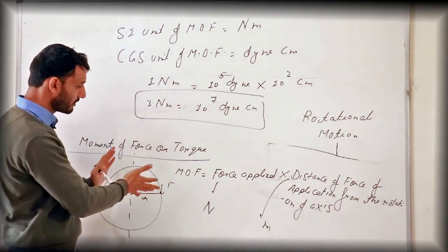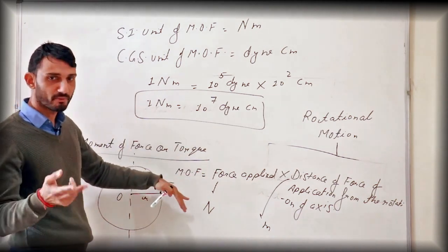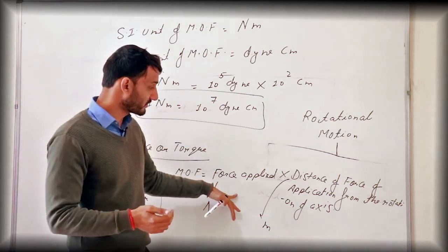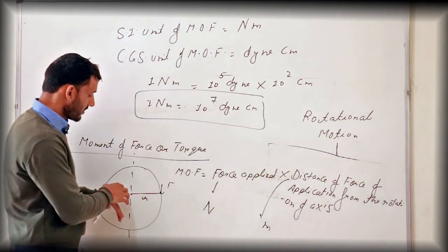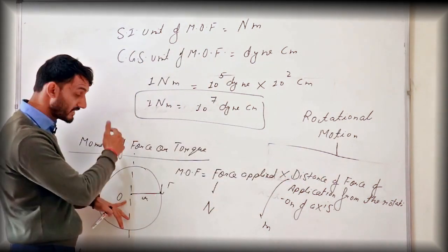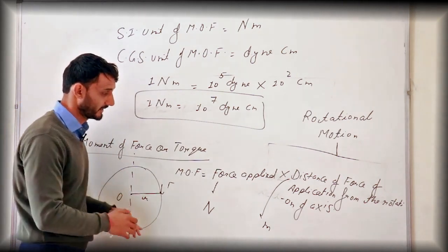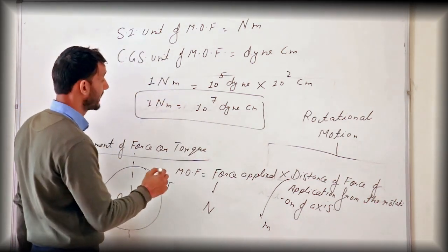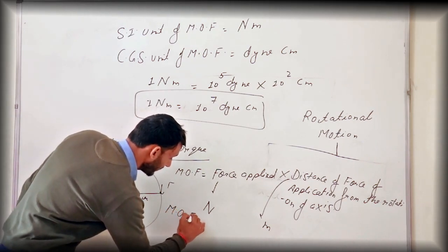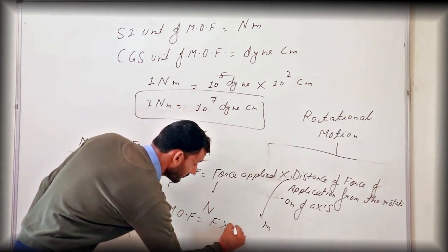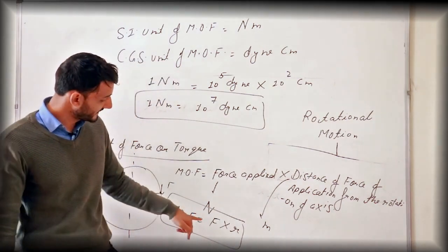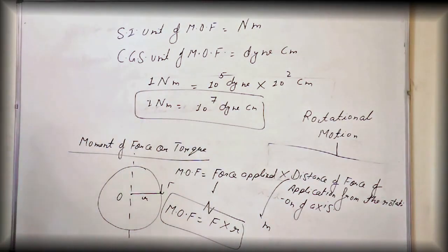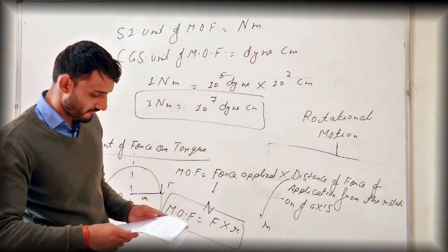To calculate moment of force or torque, we have two important factors: one is the force being applied, and the other is the distance of the point of force application from the axis of rotation, which is R. Moment of force equals force into R. So moment of force basically depends on two factors — force and distance from the axis of rotation.